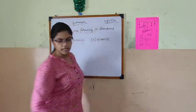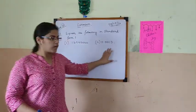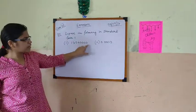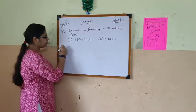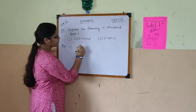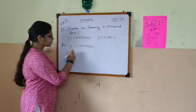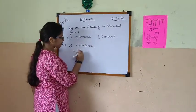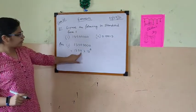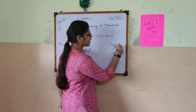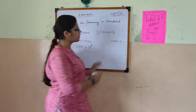So now the next one is express the following in standard form. There are two different types of sums — this one we have many zeros and this one we have a decimal point, so both are done in a different way. For the first one, we have 1,354 and there are 4 zeros. So for solving this, for 4 zeros we can take it as 10 to the power 4. So then 1,354 — we can assume that there is a decimal point here, and this decimal point will come after 1 digit.